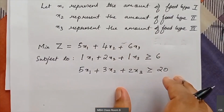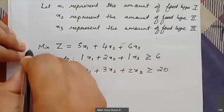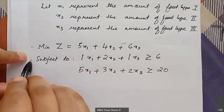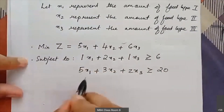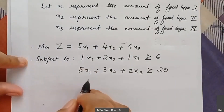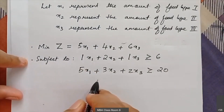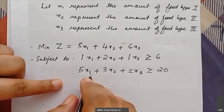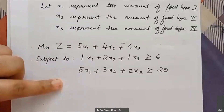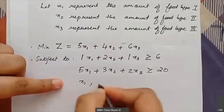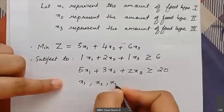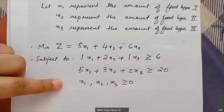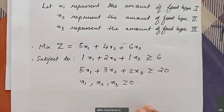Our LPP model has three parts: the objective function, the constraints, and the non-negativity constraints. The non-negativity constraints state that x1, x2, x3 ≥ 0. With this, our LPP minimization model is complete.